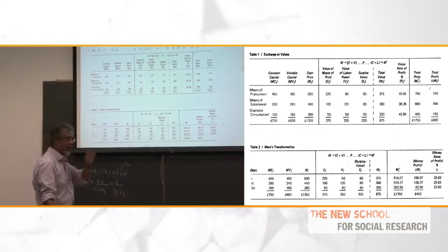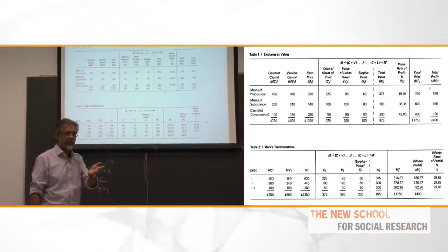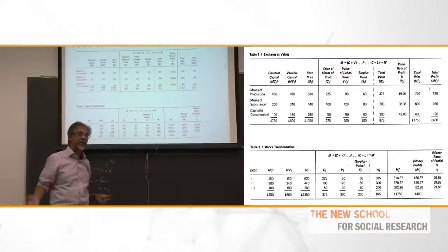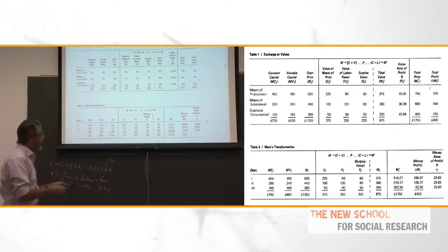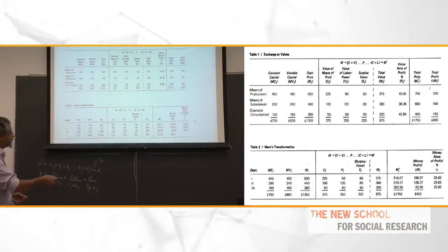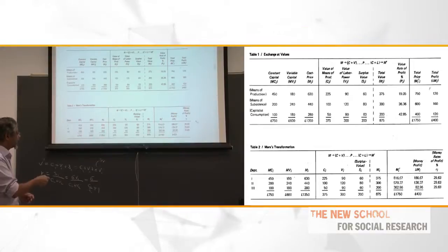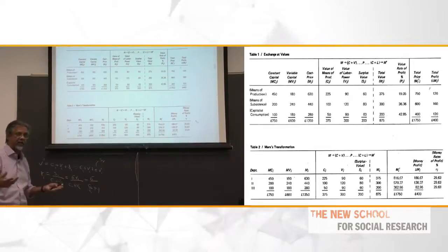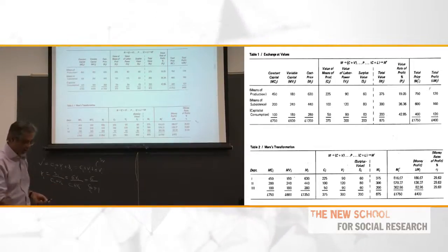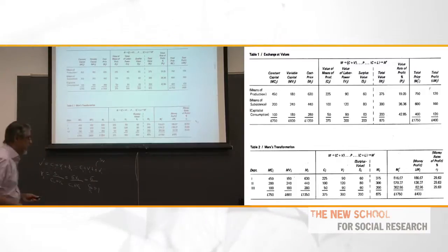I'm leading obviously to Sraffa, and also to Bortkevich, because the whole debate on the transformation problem came about saying: if we feed these prices back — at first they said there's no relationship between this and a correct set of prices. A correct set of prices being simultaneously calculating the prices of inputs and outputs so they reflect the same profit rate. Notice that Marx's transformation is a linear price at the first level of approximation.